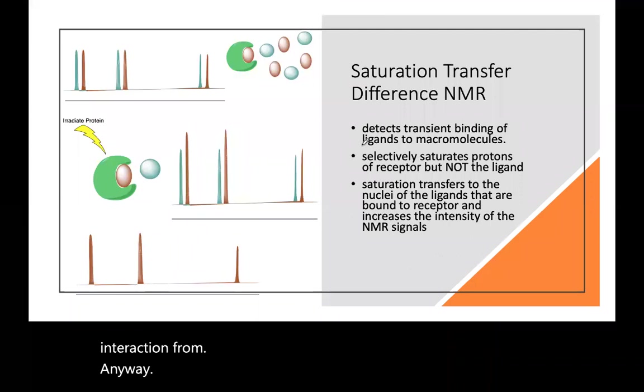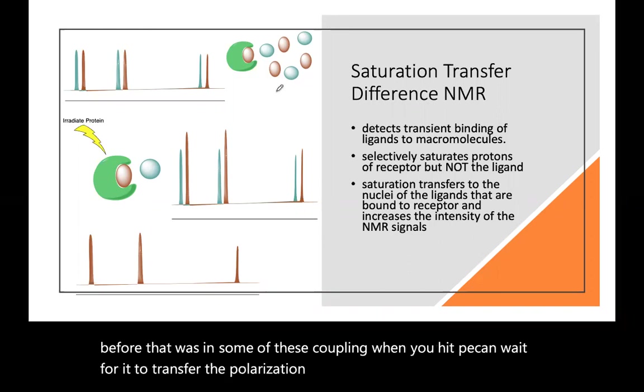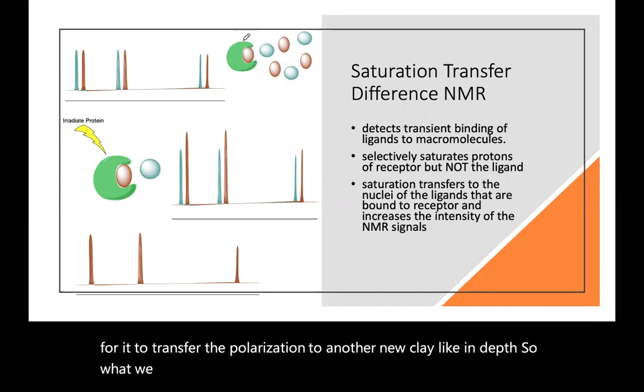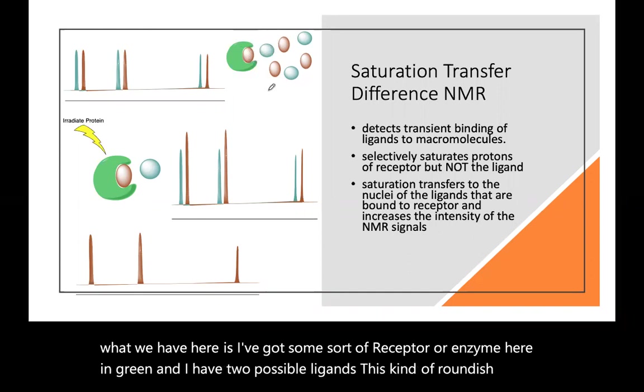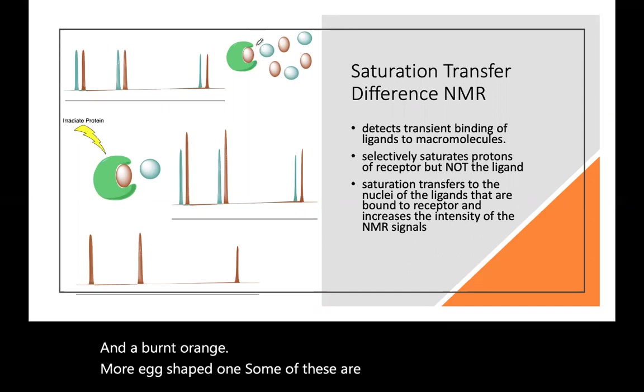Okay, one last technique that I want to talk about. It's saturation transfer difference NMR. And you've also seen saturation transfer before. That was in some of these coupling, when you hit a peak and wait for it to transfer the polarization to another nuclei like in DEPT. So what we have here is I've got some sort of receptor enzyme here in green. And I have two possible ligands, this kind of roundish teal and a burnt orange, more egg-shaped one.